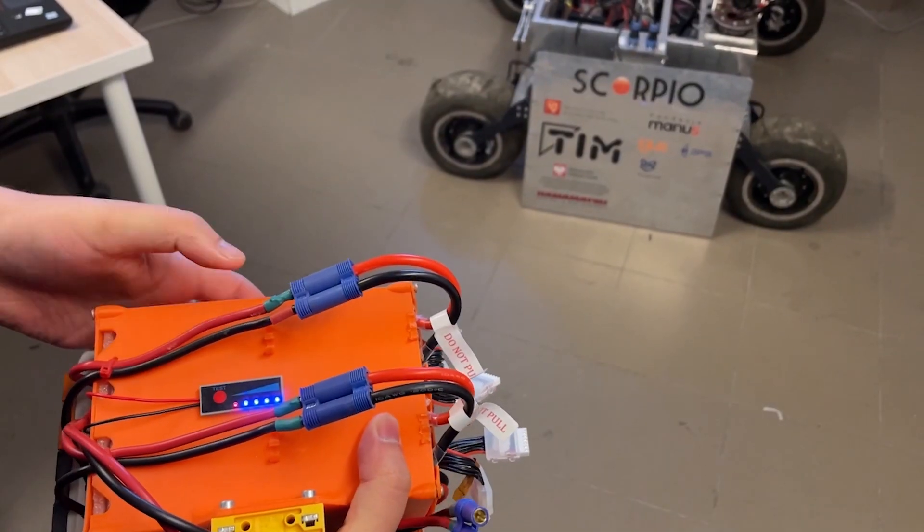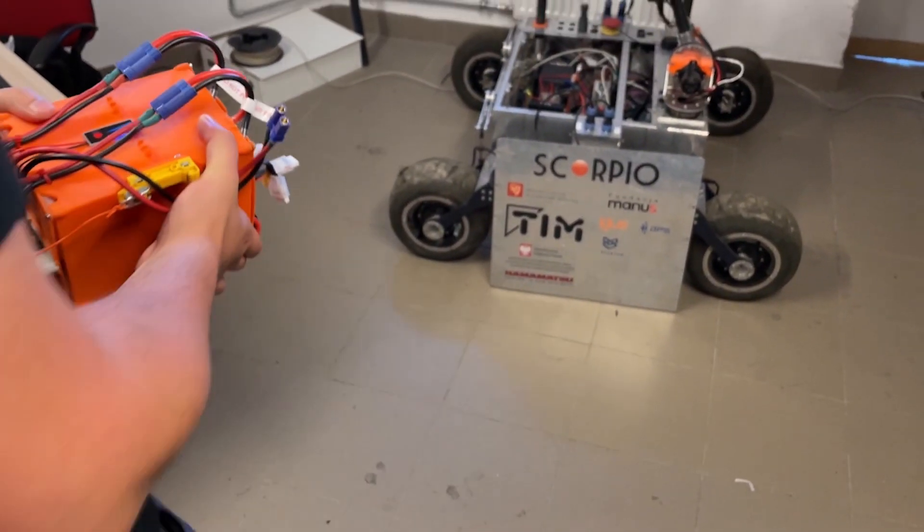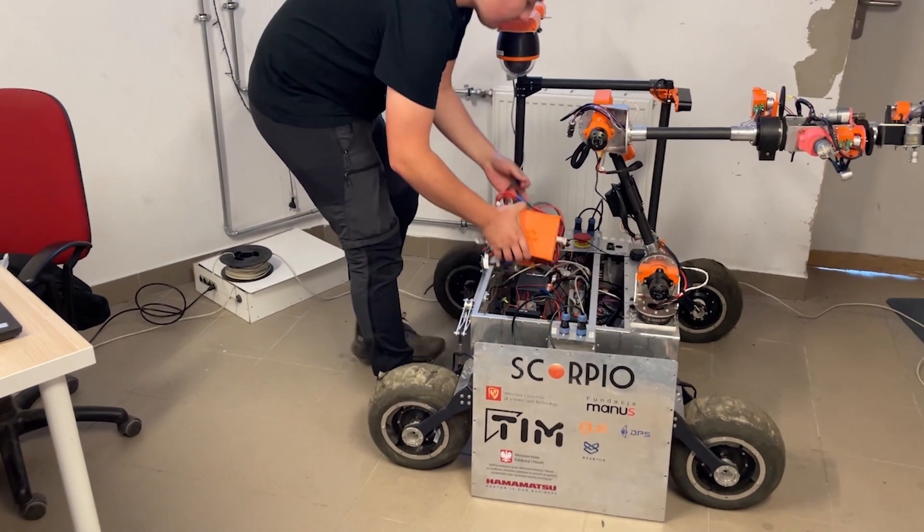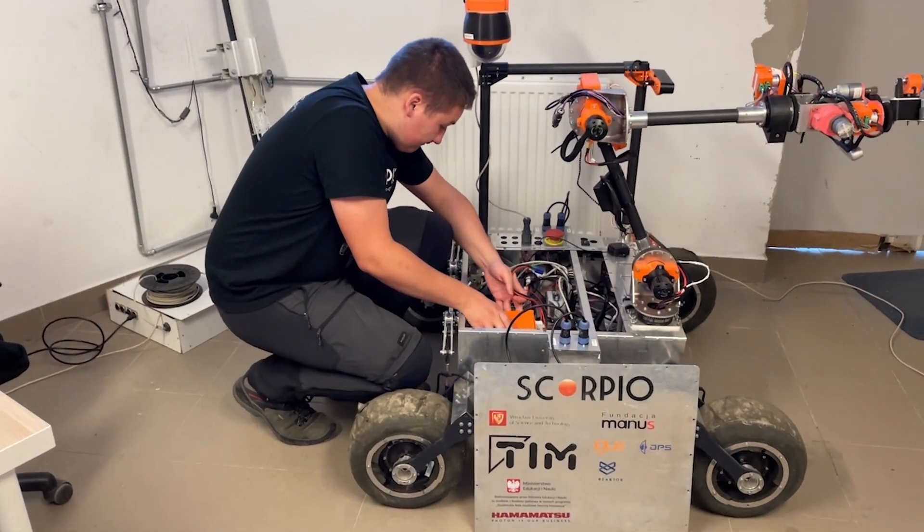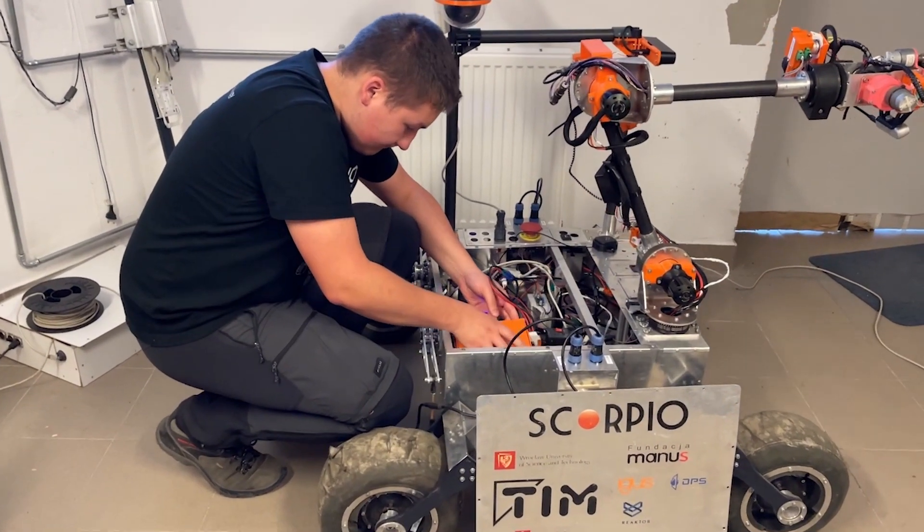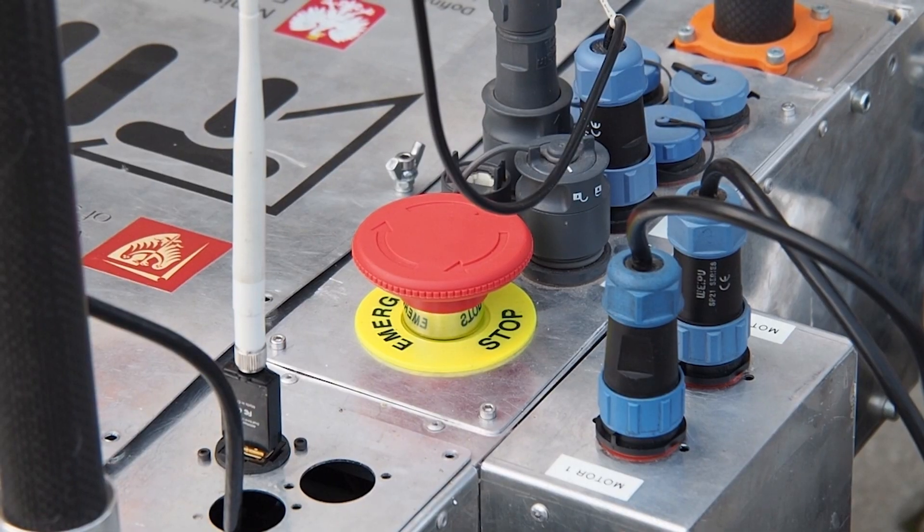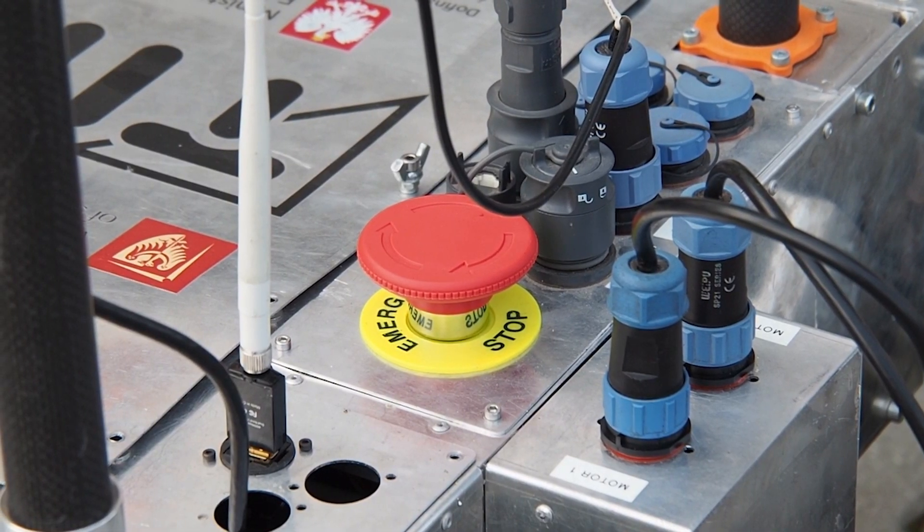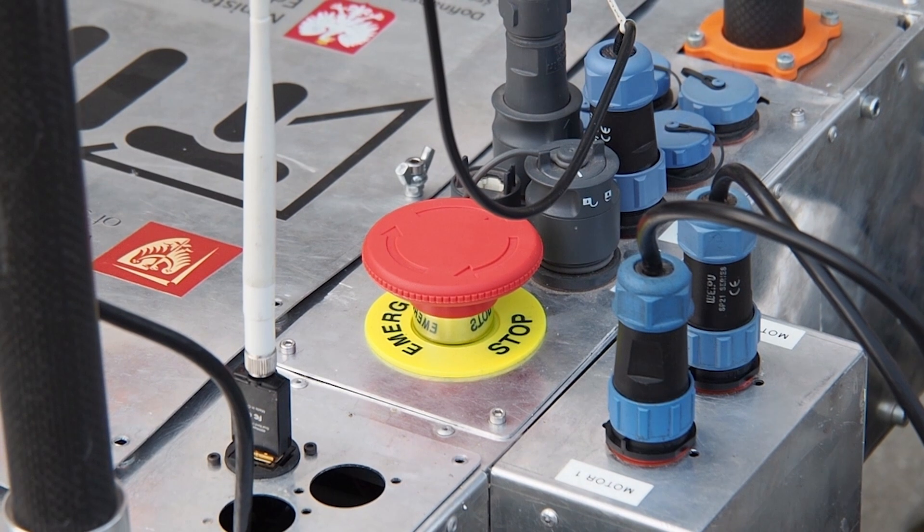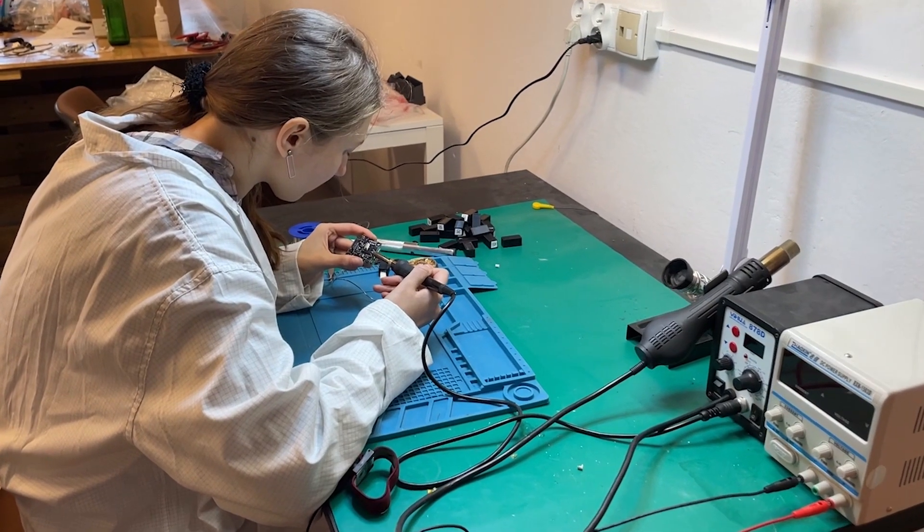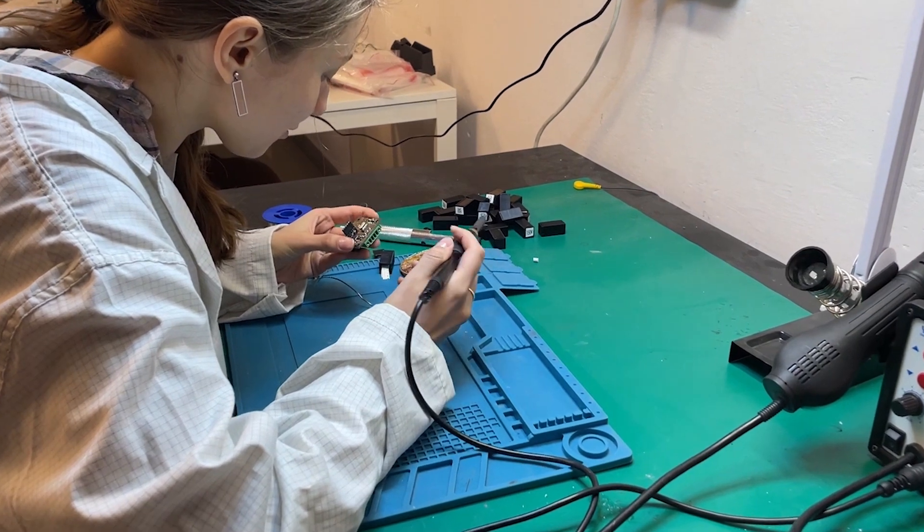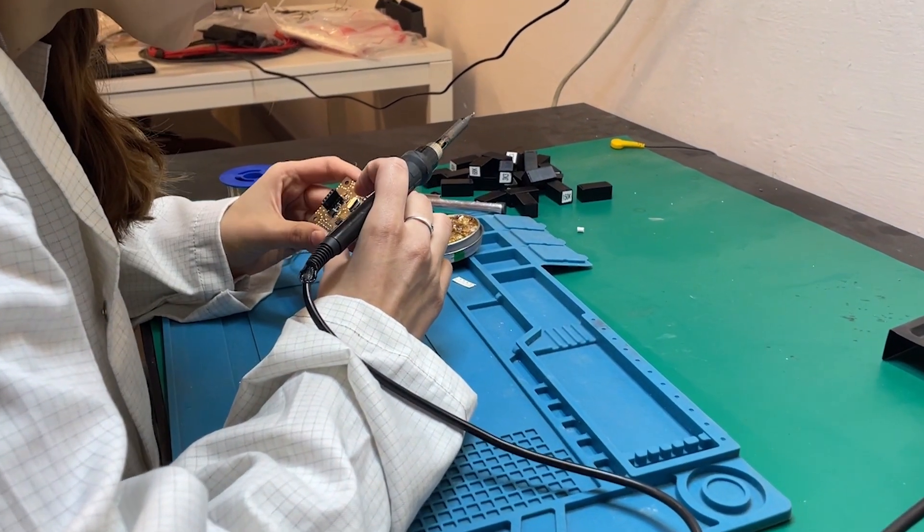Our Rover is powered by a 6S lithium polymer battery pack with a total capacity of 18,000 milliamp hours, connected to other modules via a 24-volt bus. The drive module is equipped with a visible emergency stop button that cuts power to the battery in an emergency. Every PCB made by us has over-voltage, over-current, and reverse polarity protection.